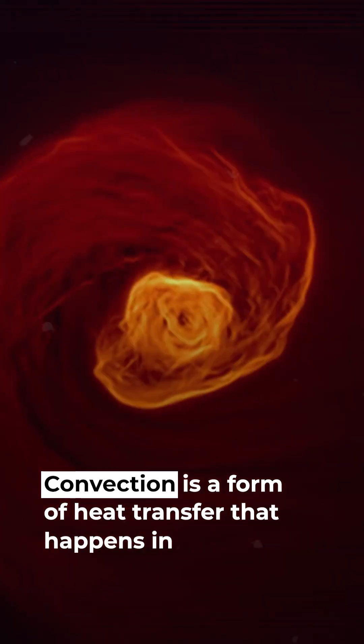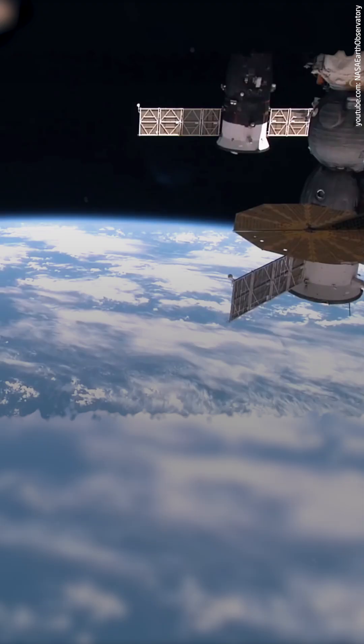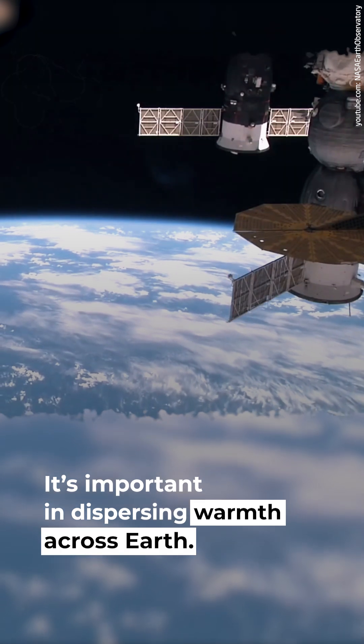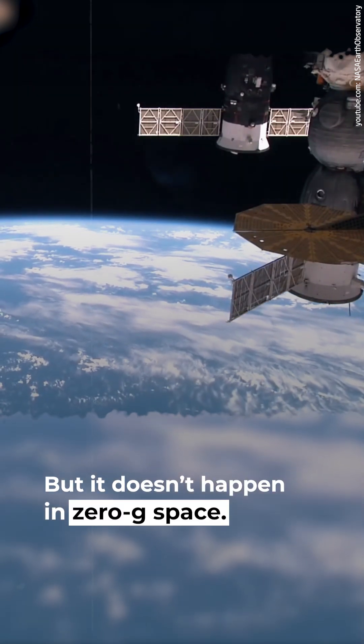Convection is a form of heat transfer that happens in the presence of gravity. It's important in dispersing warmth across Earth, but it doesn't happen in zero-G space.